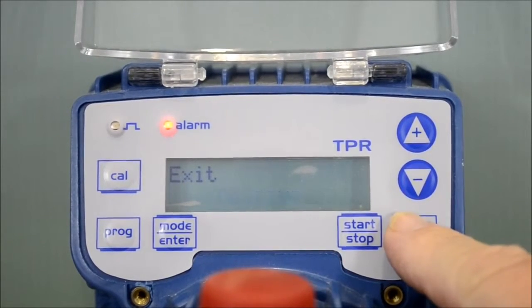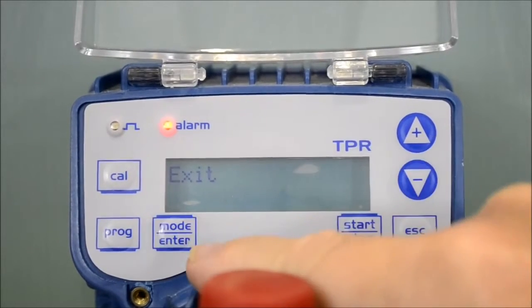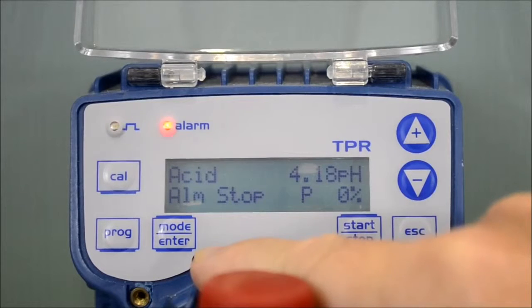You can then escape, save the changes and press enter to confirm. The pump is now in pH mode.